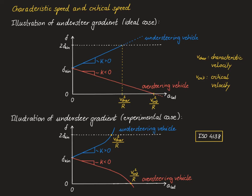Moving outside the linear region, tire nonlinearities kick in and the linear relationship is lost. Nonetheless, you can experimentally determine the characteristic speed for an understeering vehicle — where the steering angle curve first passes through twice the kinematic value — and the critical speed for an oversteering vehicle — where the curve passes through zero steering angle.